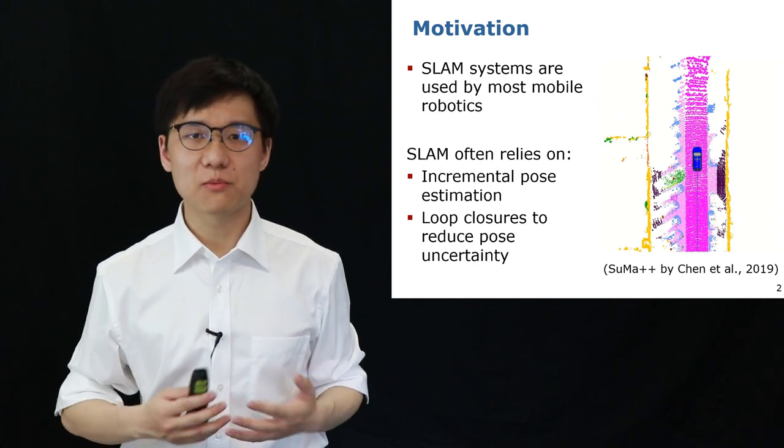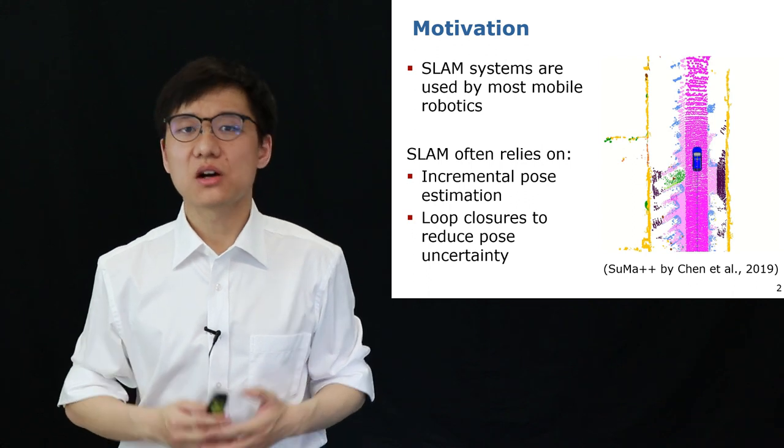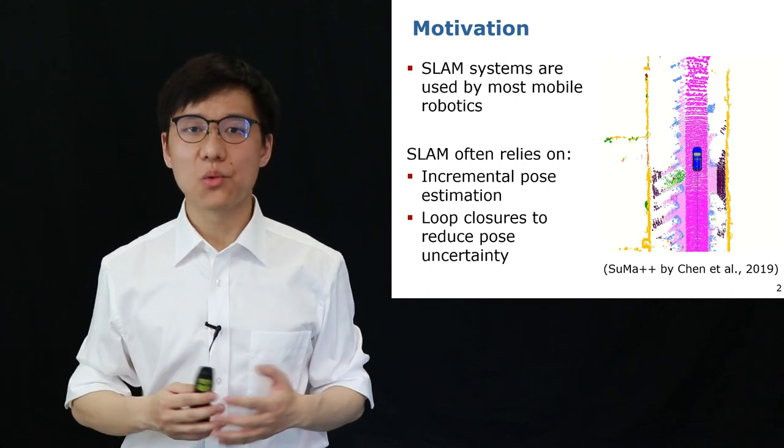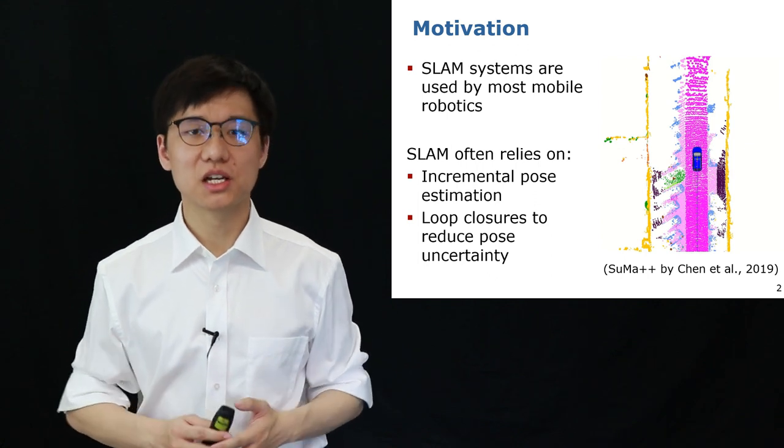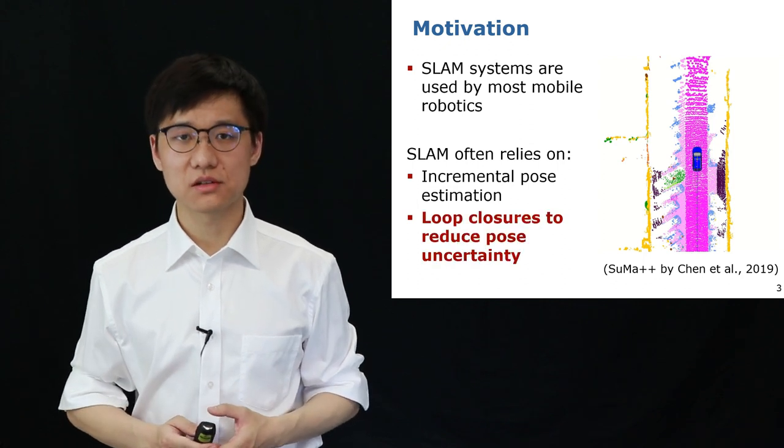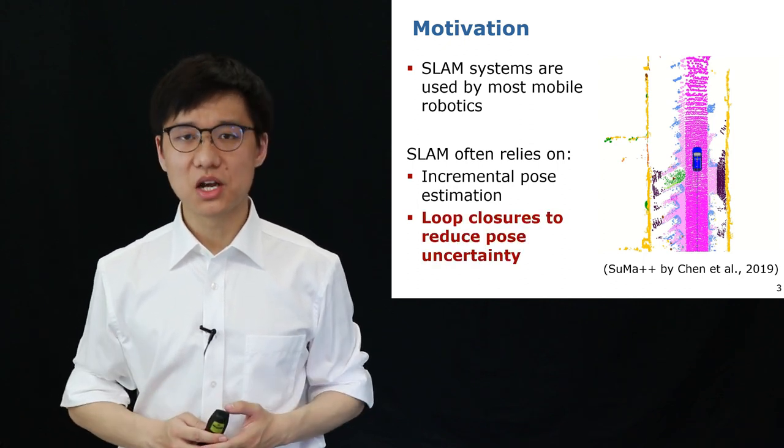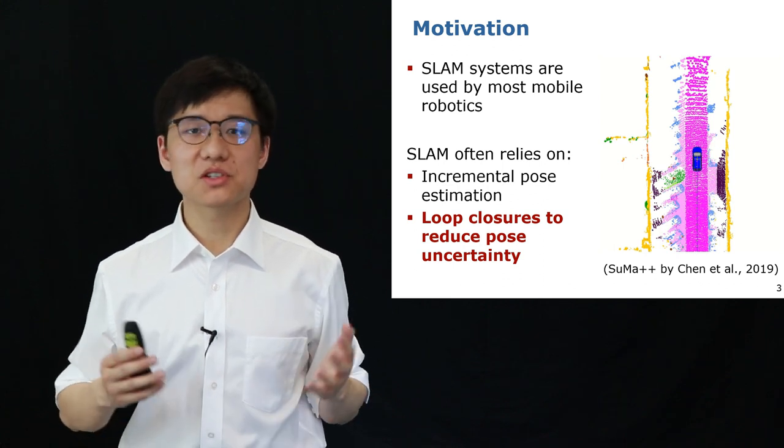SLAM is a fundamental capability required by most autonomous systems. It often relies on two parts: one part is incremental pose estimation and the other part is loop closing to eliminate the drift and reduce the pose uncertainty. In this paper we focus on the loop closing part for LiDAR-based SLAM for autonomous vehicles.